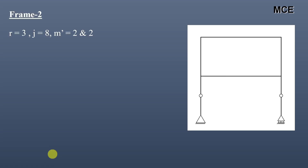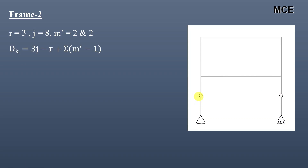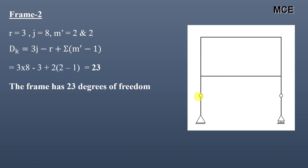For frame 2, this frame has 3 reactions, 8 joints, and 2 internal hinges. The number of members meeting at both internal hinges is 2, so m′ = 2 and 2. The value of DK for this frame is equal to 23, meaning this frame has 23 degrees of freedom.